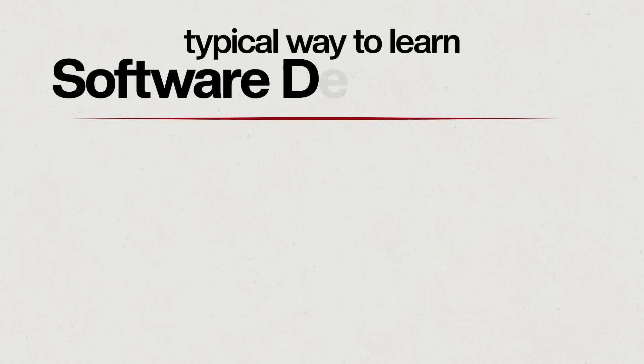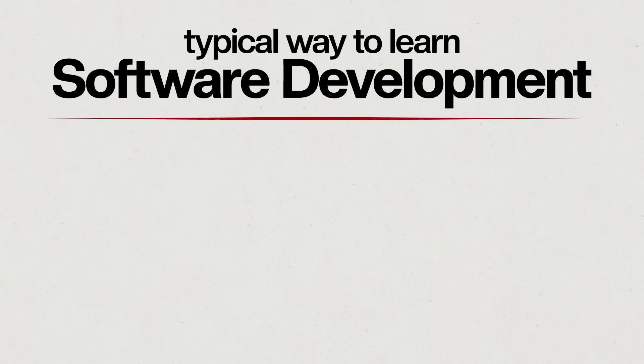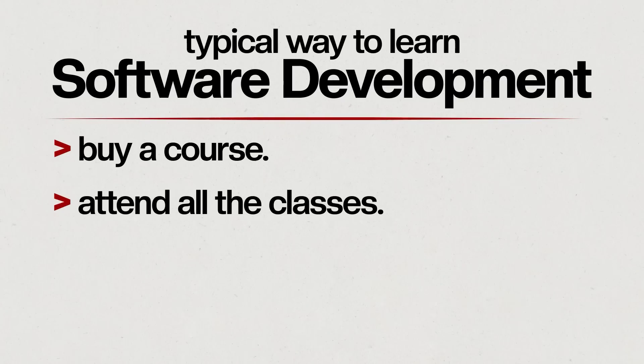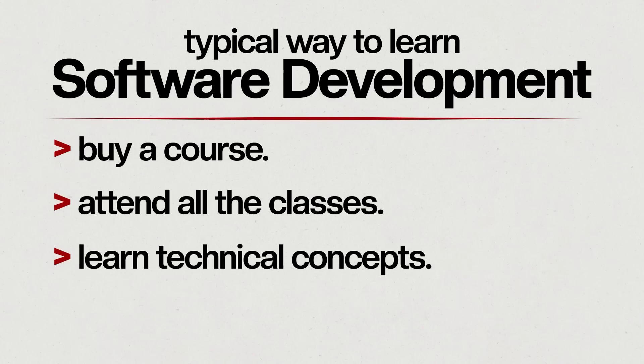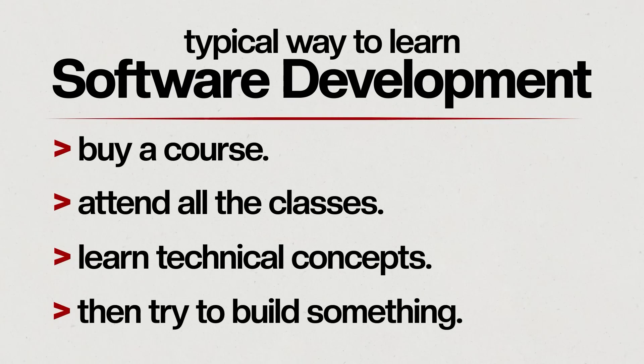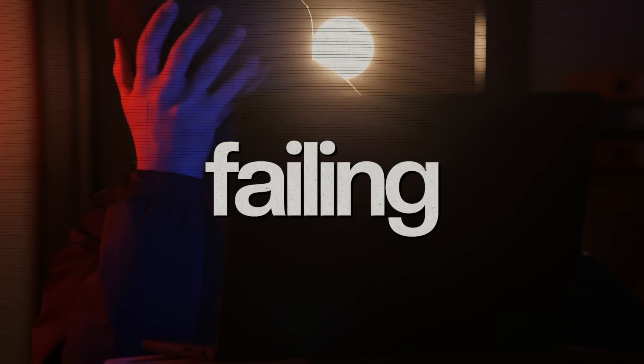There is a typical way to do it which leads to 90% of people failing: buy a course, start doing all the classes, learn about all the technicalities — syntax, loops, functions, objects, and classes — and after that try to build something. Most people are not able to watch through all of the tutorials, they have doubts along the way and don't know what to do, so they end up just failing.